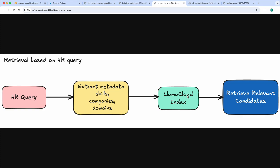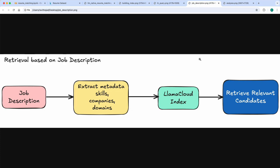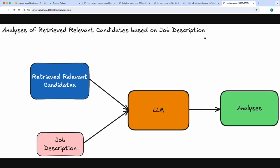Once you have this metadata and the text from the documents, you index all these resumes on LlamaCloud along with the metadata so we can use them for retrieval. For the first stage — retrieval based on an HR query — we extract skills, countries, companies, domains, and other metadata from the query to retrieve relevant candidates. Similarly, from a job description we extract the same metadata information and retrieve relevant candidates.